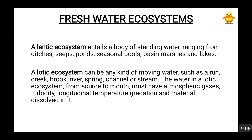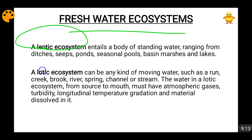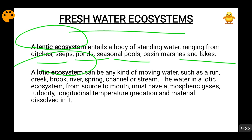Freshwater ecosystems consist of lentic and lotic ecosystems. In a lentic ecosystem, water is not moving — it is standing stagnant — so it includes ponds, ditches, pools, and lakes. In a lotic ecosystem, the water is moving — for example, rivers, springs, and waterfalls. Springs, channels, streams, runs, creeks, and brooks form part of the lotic ecosystem.